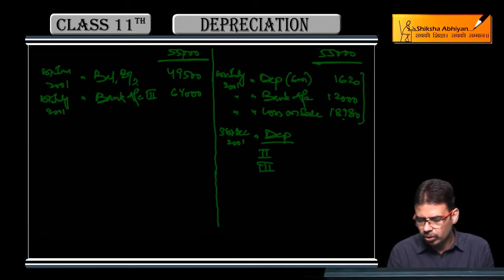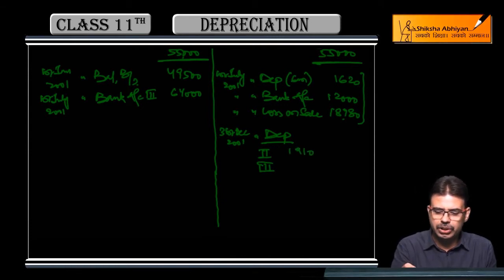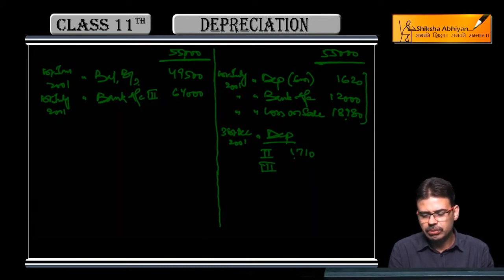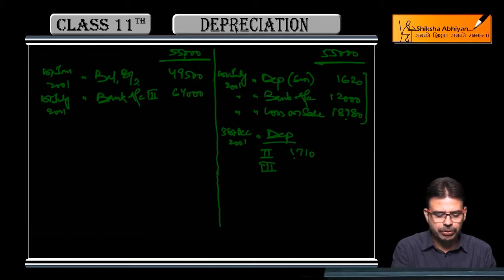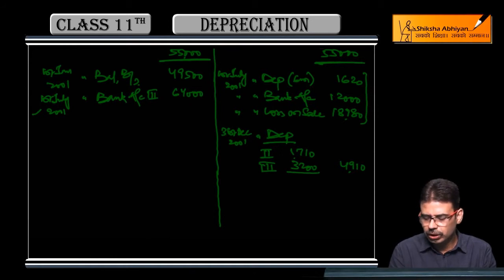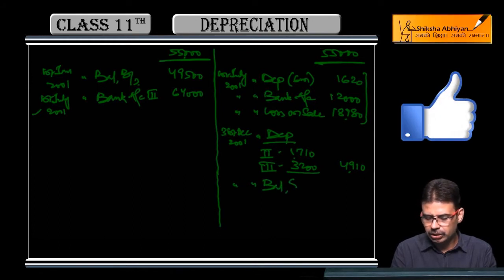On 17,100 rupees our depreciation is 10%, that is 1,710 rupees. Balance remaining will be the balance carried down. And machine number 3: 64,000 rupees machinery. On 64,000 rupees, since you purchased it on 1st July, full year depreciation would be 6,400, so half year depreciation is 3,200. So 1,710 plus 3,200 equals total 4,910 rupees depreciation, and the remaining balance is balance carried down.